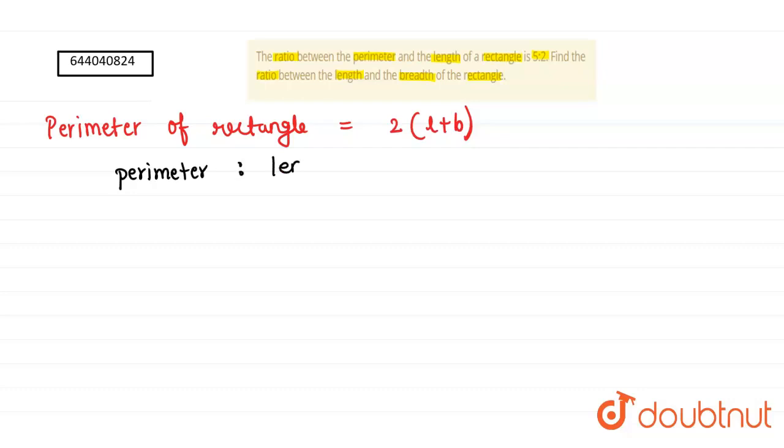The perimeter is 2(l+b) divided by length l equals 5/2. Therefore, cross multiplying, 4 times (l+b) equals 5 times l.